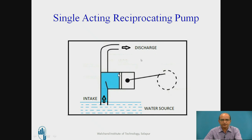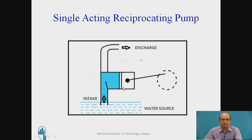In a Single Acting Reciprocating Pump, the water is lifted from low level to high level. As you know, pumps are basically used for lifting water from low level to high level. In the same way, the Single Acting Reciprocating Pump is used for this purpose. The arrangement is similar to the piston and cylinder used in an IC engine.